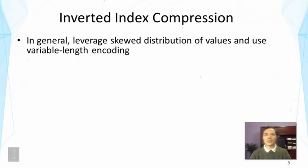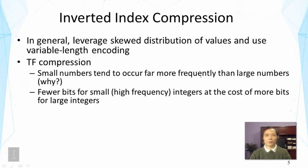Because postings are very large, it is desirable to compress them. The idea of compression in general is to leverage skewed distributions of values. We use variable-length encoding instead of the fixed-length encoding used by default in programming languages like C++. The key principle is to use fewer bits to encode frequent values, at the cost of using more bits to encode rare values.